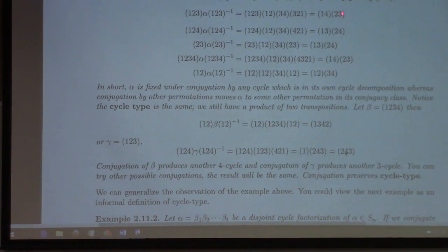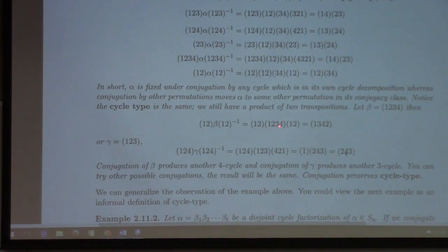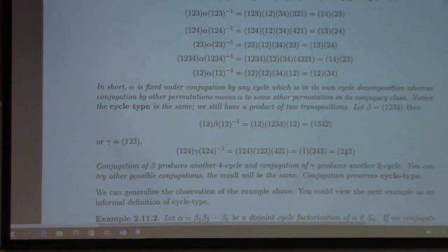What we have is this preservation of cycle type under conjugation. If I looked at a different one, just to show you it's not some quirk of alpha: if I look at beta = (1,2,3,4), which is a 4-cycle, and I conjugate by (1,2), what happens? 1 goes to 2, 2 goes to 3, 3 stays put... working through the calculation gives (1,3,4,2). As you can see, conjugation of a 4-cycle produced a 4-cycle — same cycle type before and after.